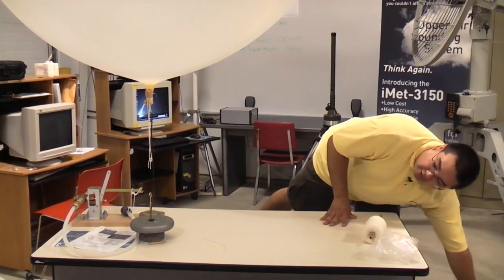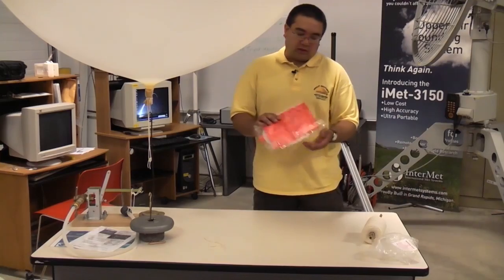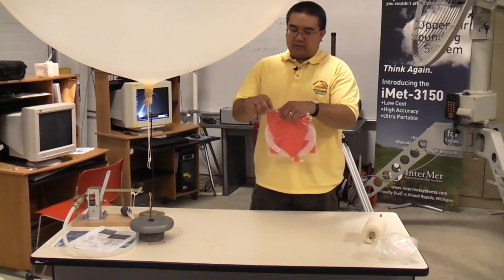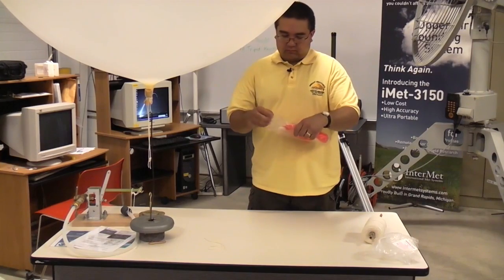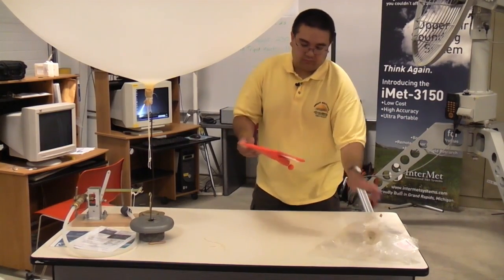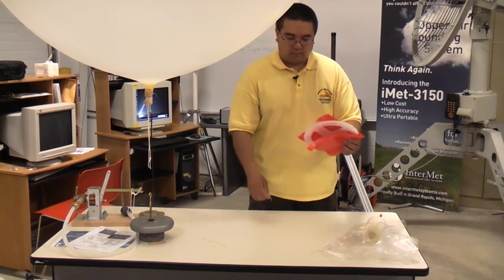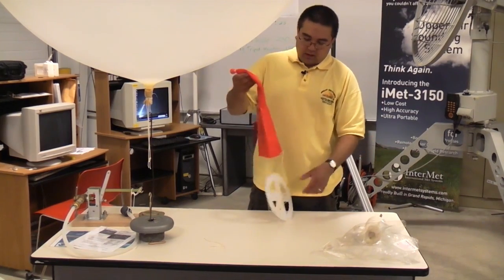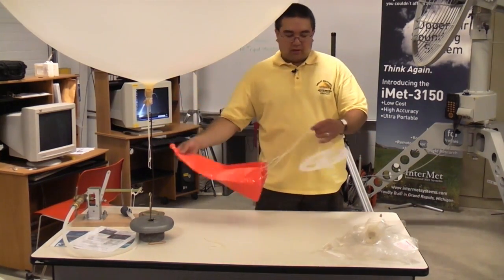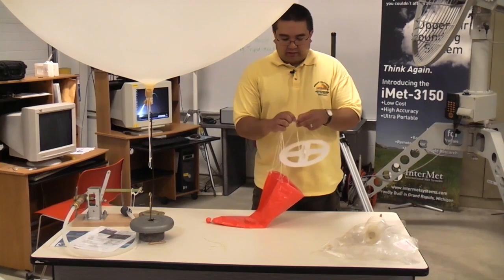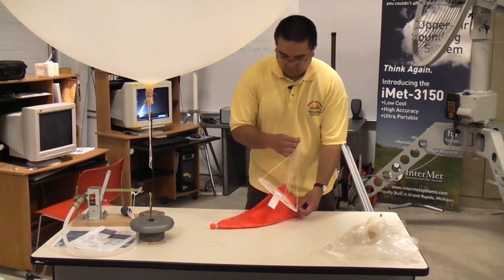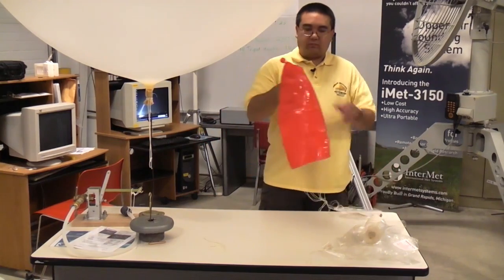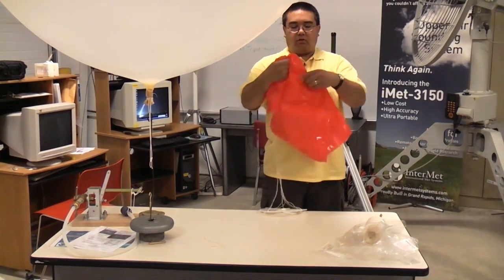Next, we could tie the parachute to the balloon. So we'll take the parachute out of the bag and unfold the parachute. And we need to get rid of all the ties in the string, so the parachute can open fully. Open the parachute.